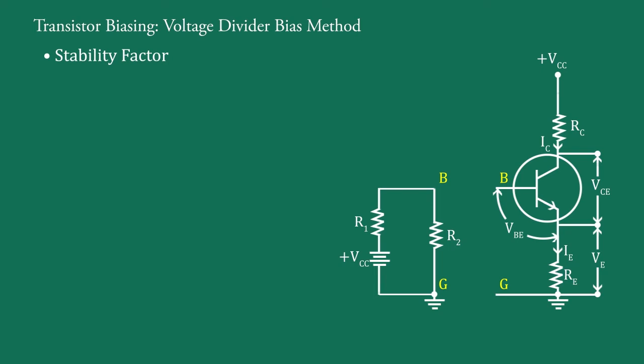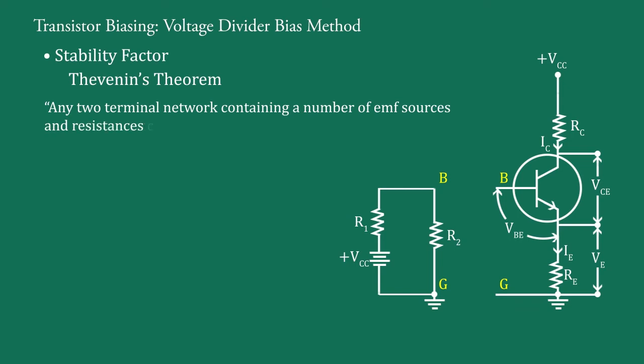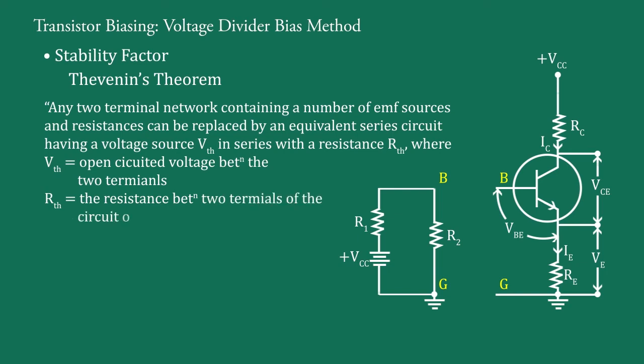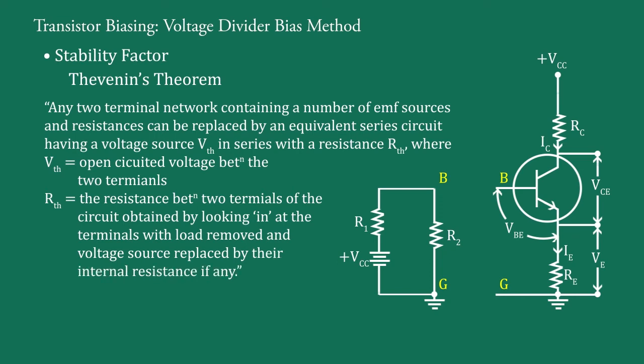But we will keep it separate and apply Thevenin's theorem for simplification. What is Thevenin's theorem? Any two terminal network containing a number of EMF sources and resistances can be replaced by an equivalent series circuit having a voltage source VTH in series with a resistance RTH, where VTH is open-circuited voltage between the two terminals and RTH is the resistance between two terminals of the circuit obtained by looking in at the terminals with load removed and voltage source replaced by their internal resistance if any.